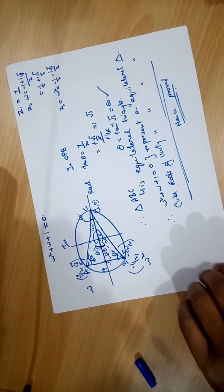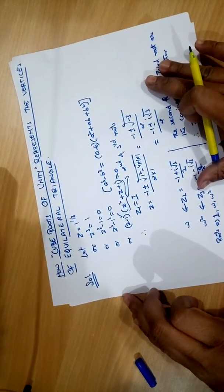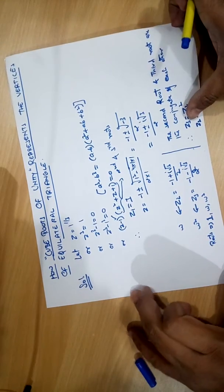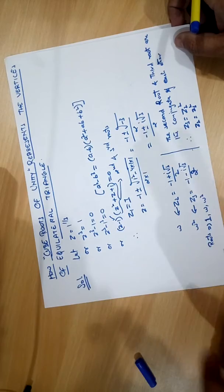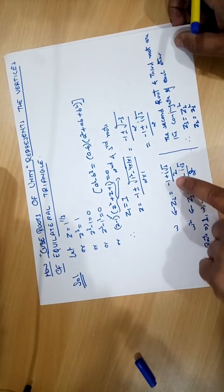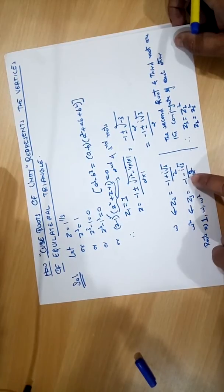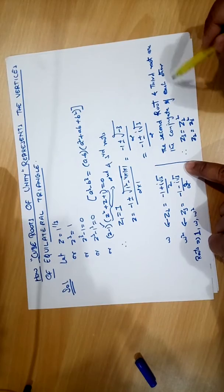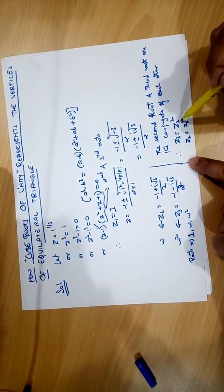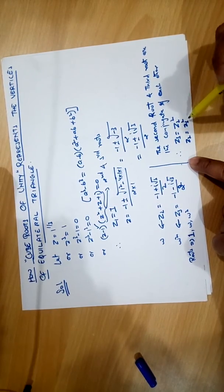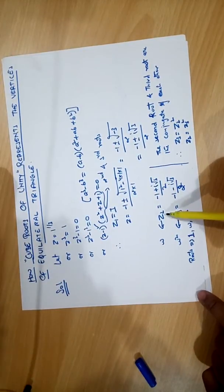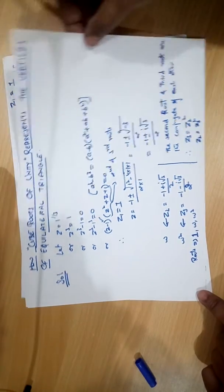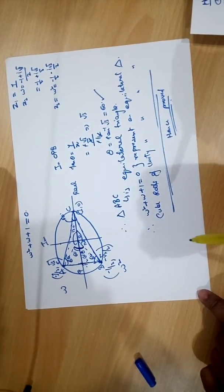To summarize: we first calculated the cube roots of unity and found three roots — z1 as 1, z2 as minus 1 plus i root 3 by 2, and z3 as minus 1 minus i root 3 by 2. The second and third roots are conjugates of each other, so z3 equals z2 squared and z2 equals z3 squared. We denoted z2 as omega and z3 as omega squared, then plotted all points and proved the triangle is equilateral.